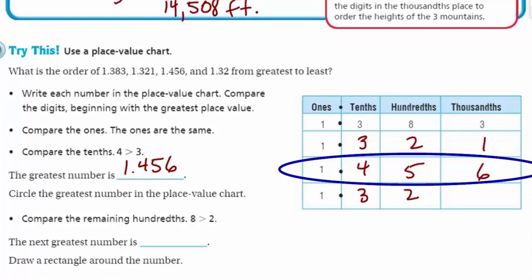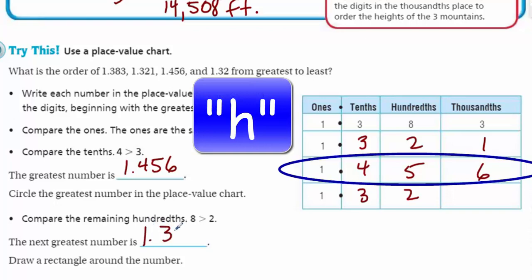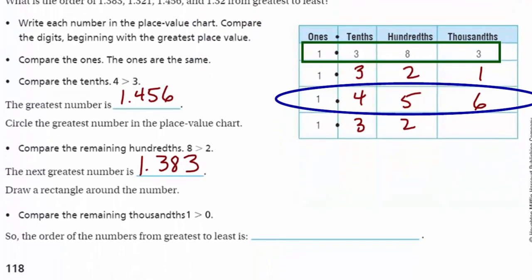So compare the remaining hundredths. Looks like we have eight is greater than two. So the next greatest number is, yeah, one point three, eight, three. You see that eight is greater than any of the twos that are there. So I'm going to go ahead and put one point three, eight, three. It says, draw a rectangle around the number. Now let's just compare the remaining thousandths. One is greater than zero. I don't see a zero up there. However, don't be fooled. When you have one point three, two, we could write what is called an equivalent decimal. An equivalent decimal. We just put a zero after those digits. And it really doesn't change the value of the number. That's if it's blank and there's nothing there. We know it's a zero. Then one does beat out the zero. So the order of the numbers from greatest to least is one point four, five, six. We usually use a semicolon here to separate our numbers to not be confused with the comma. So we'll put a semicolon. One point three, two, one. And finally, our last guy, one point three, two. Yes.